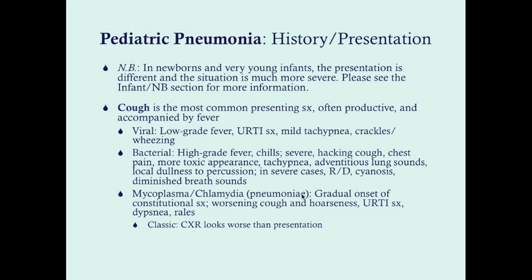Mycoplasma and chlamydia pneumonia tend to be more gradual in onset. They can have constitutional symptoms — muscle pains and aches — and it just comes on very gradually. Usually they're not so sick they can't go to school, and so this is often called walking pneumonia. It comes on and lasts for quite a while. The cough and hoarseness tend to get worse, but they're not as sick-looking as with bacterial pneumonias. And when you get a chest x-ray on these patients, it looks really bad — worse than how they present, or out of proportion to the presentation. That is classic for mycoplasma pneumonia.